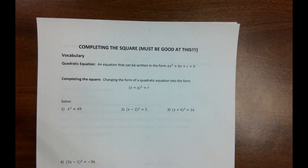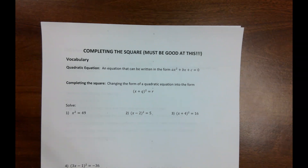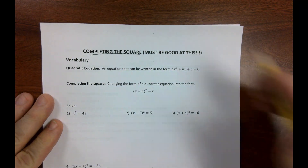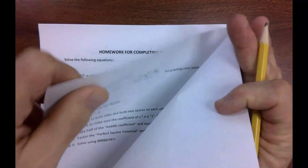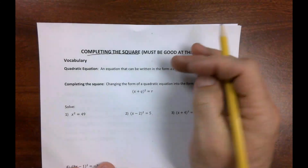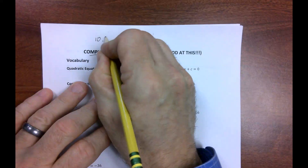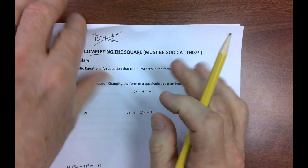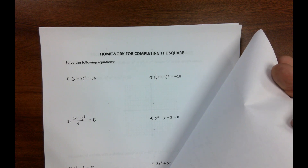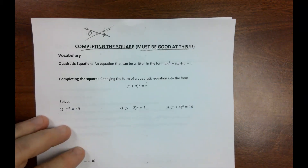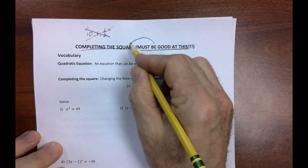This is not a section taught from the book — they are assuming you are very good at completing the square. So we're going to take an extra day. We'll call today's lesson '10-1 one half.' It's not from your book, and your homework is right here in your packet. The stuff we're going to pile on is all asking you to complete the square.